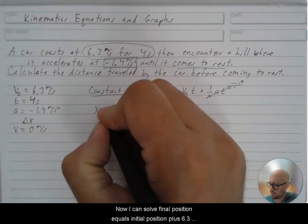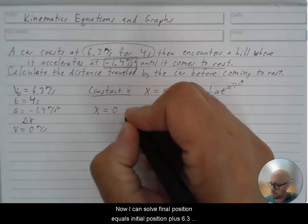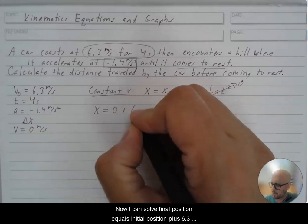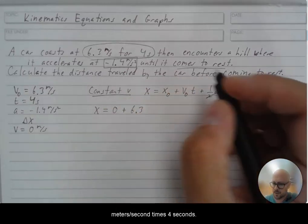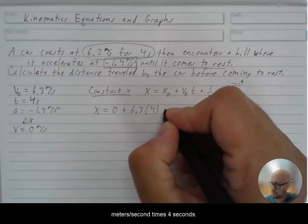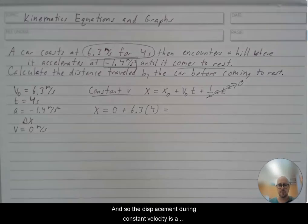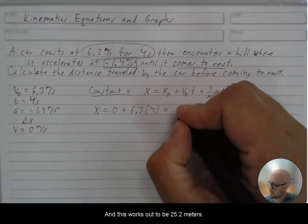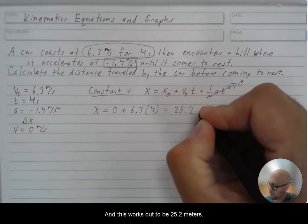Now I can solve final position equals initial position plus 6.3 meters per second times four seconds. And so the displacement during constant velocity is a pretty easy thing to calculate. And this works out to be 25.2 meters.